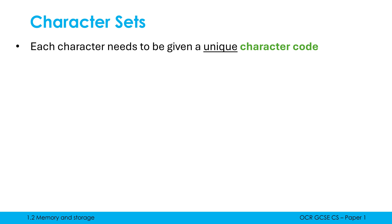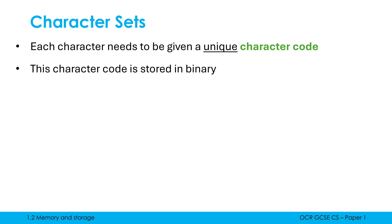To be able to store characters in binary, we need to give each character a unique character code. This character code is often written as a denary number, but in reality we store it in binary. It needs to be unique so that the code for capital A is different to the code for capital B. What exactly this code is doesn't really matter as long as it is unique.